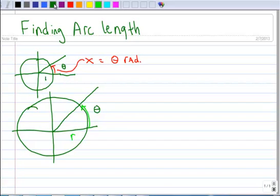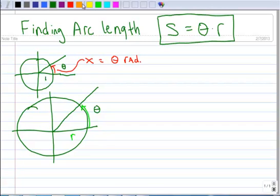Alright, so there is a formula. The formula for arc length, which is denoted s, is s equals theta times the radius. But there's a special case. I'm going to put a little asterisk there, because the angle must be in radians. It can't be in degrees.